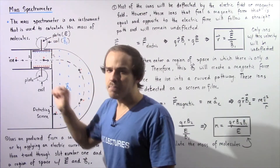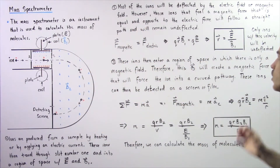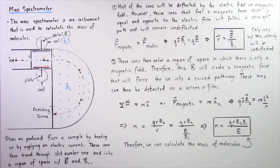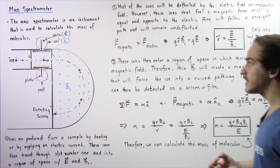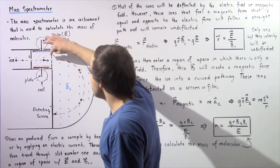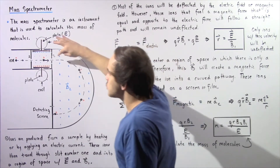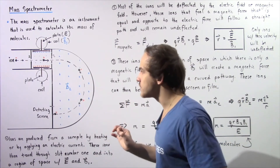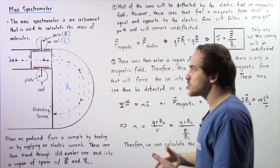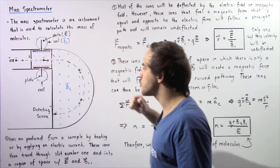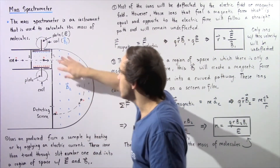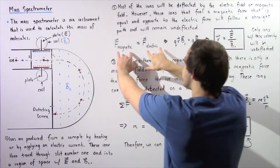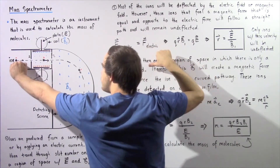Suppose our ion has a positive charge. Most ions will be deflected by the electric field or the magnetic field. However, those ions that feel a magnetic force equal and opposite to the electric force will follow a straight pathway and remain undeflected, because the net force will be zero. The other ions which are deflected will remain in this region.